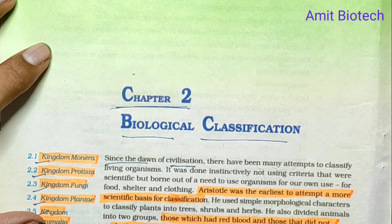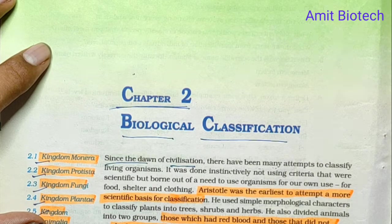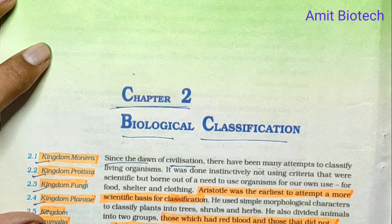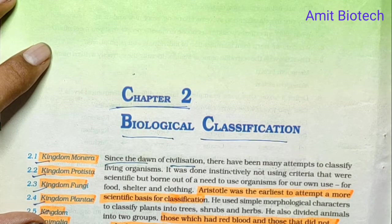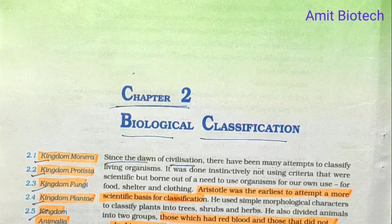Classification of organisms into plants and animals was easy to understand, but a large number of organisms did not fall into either category and could not fit neatly into the two-kingdom classification system. Hence the two-kingdom classification was found to be inadequate.